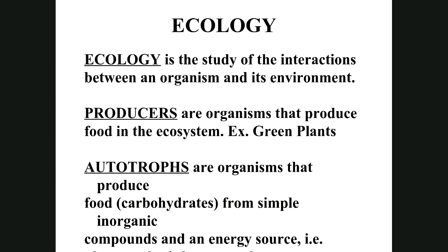Some of those plant parts we can eat, like fruits and beans. Autotrophs are organisms that produce carbohydrate food from simple compounds and an energy source — the sun. Photosynthesis by green plants is the mechanism. So autotrophs and producers are synonyms for the same thing.